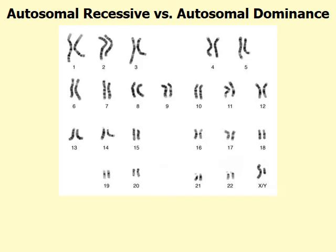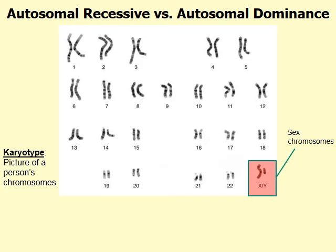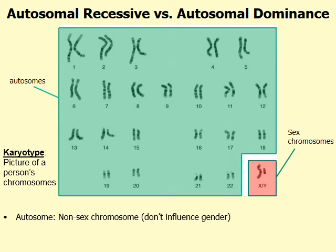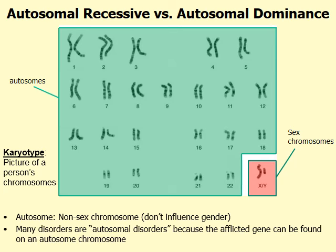You might recognize this picture as what's called a karyotype, a picture of a person's chromosomes. Chromosome 23 are called the sex chromosomes because they influence and have genes on them that determine our gender. The other 22 chromosomes are called autosomes — a non-sex chromosome. There are no genes on these chromosomes that influence gender. When we study genetics, we often study autosomal recessive and autosomal dominant disorders — actual disorders caused by an afflicted gene found on an autosome.